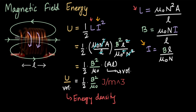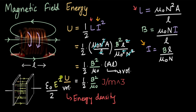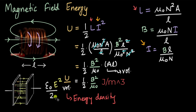We've done something similar before for electric fields, using a capacitor to find the electric field energy density, which came out to ε₀E²/2. Comparing the two energy densities, there is a factor of half common to both, and both depend on the square of their respective fields — E squared and B squared.